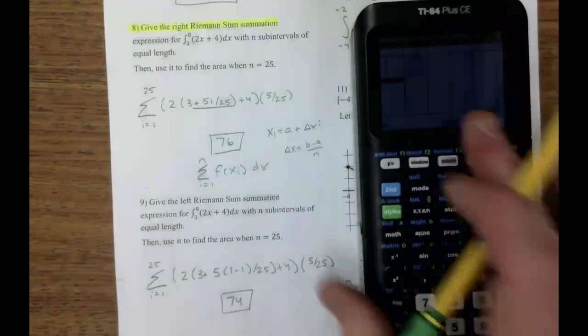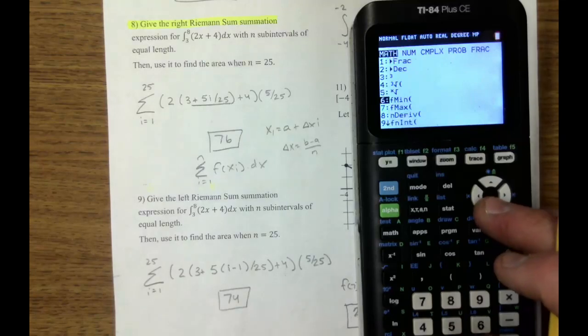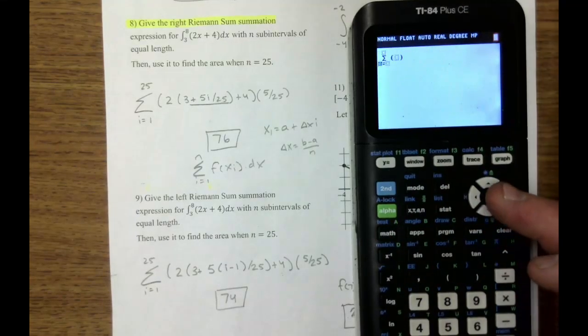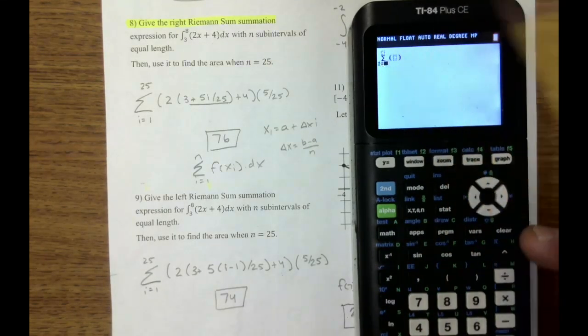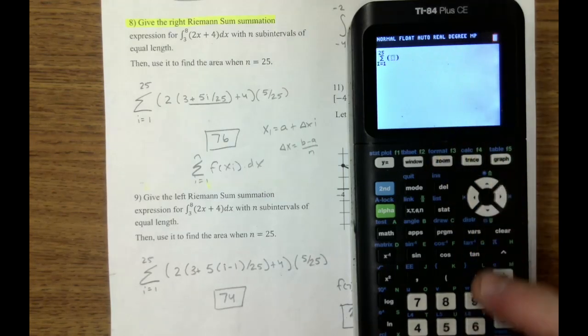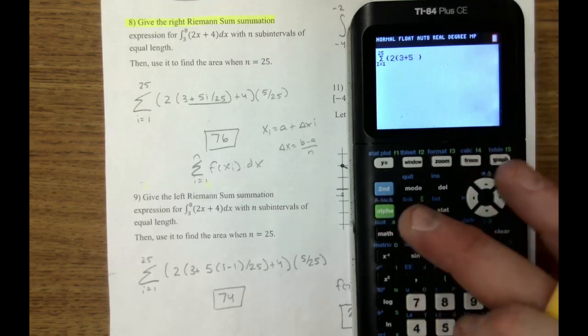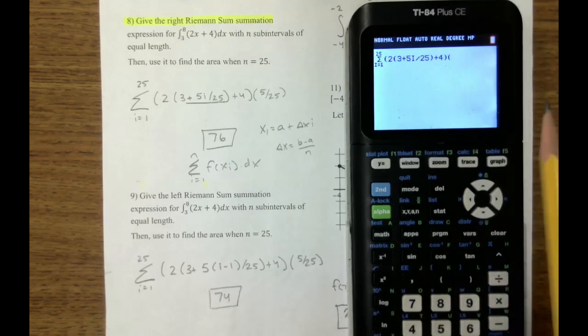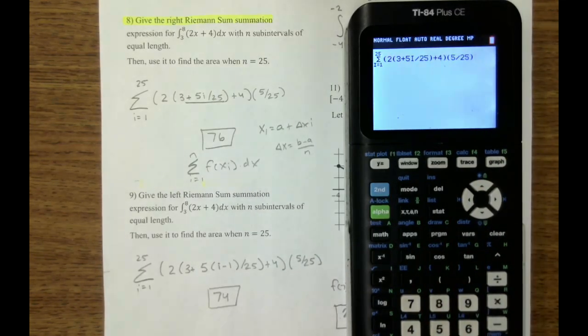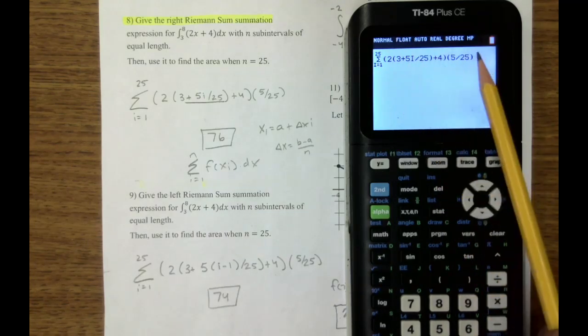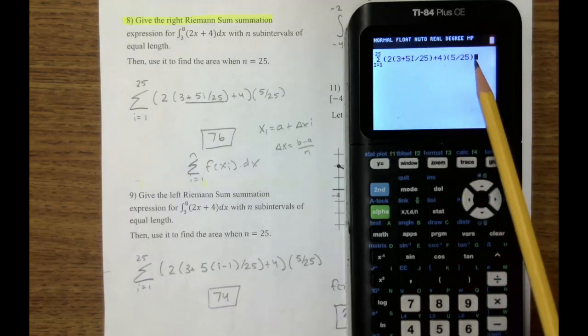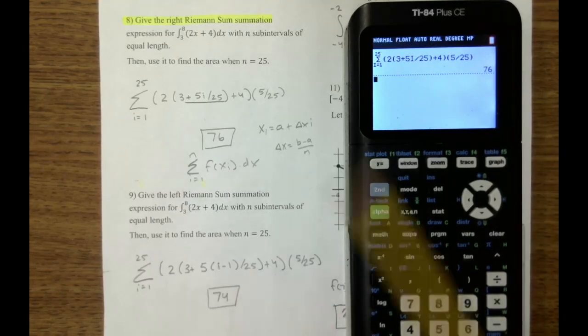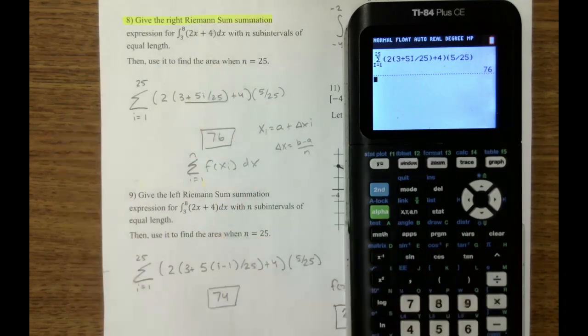And then be careful when you use your calculator. If you want to type this in your calculator, you hit math. You go down to the summation notation. You hit math. You go down to summation notation. You be very careful. And you use the i to one to twenty-five of two parentheses three plus five. Use the i divided by twenty-five plus four. And then I always recommend you just put your delta x on the outside. And there's everything you need to know. There's two x plus four delta x. So notice there's a twenty-five, twenty-five, twenty-five. There's a five over twenty-five, five over twenty-five. Press enter. And it's going to add up all twenty-five rectangles for you and get seventy-six. So you need to know summation notation.